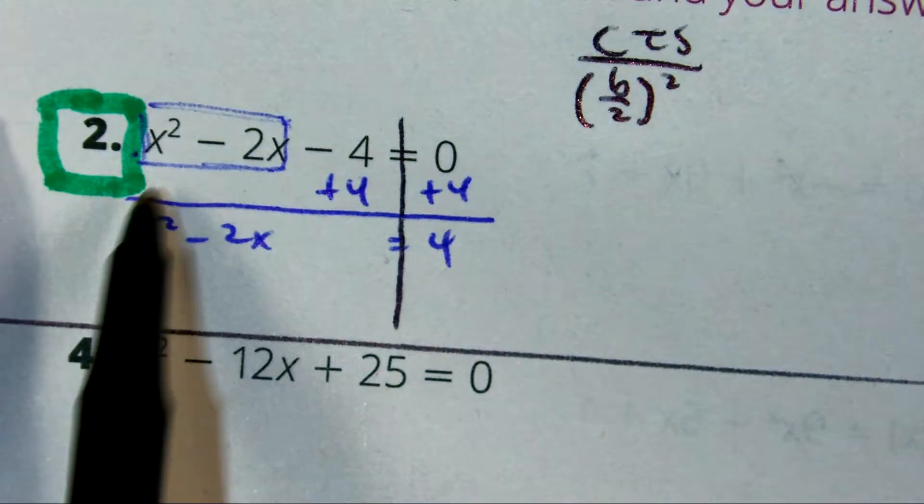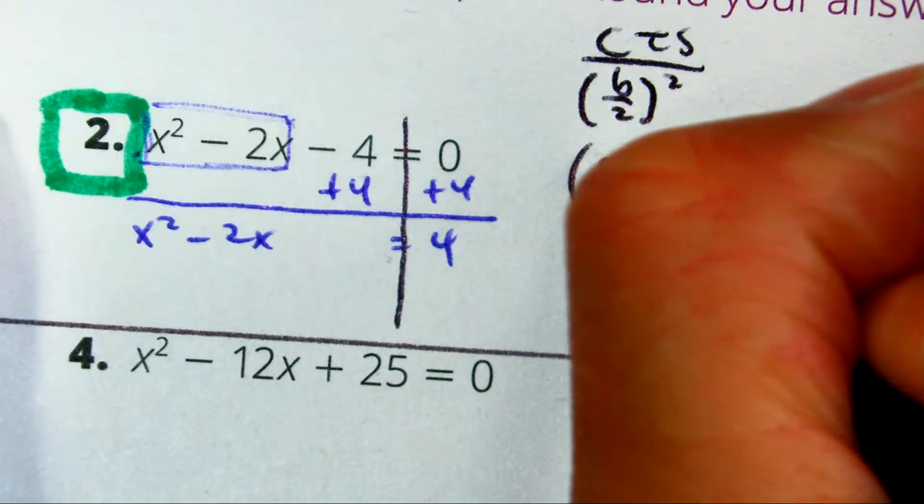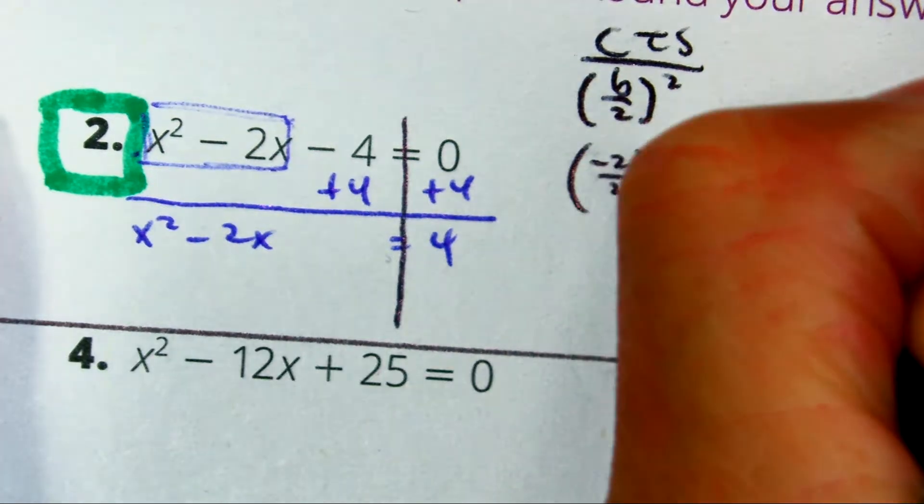Eric, what's your b value over here? Correct. Eric, what's half of negative 2?